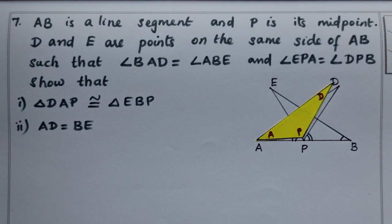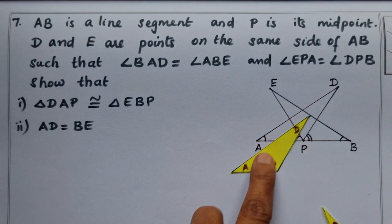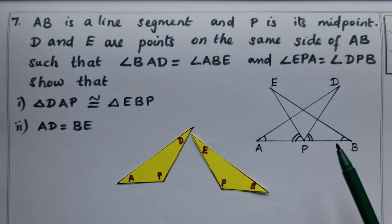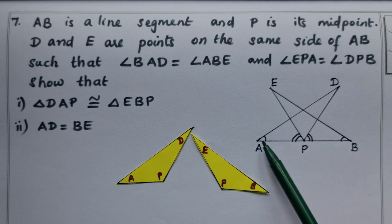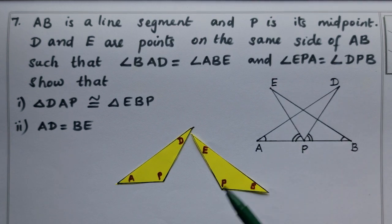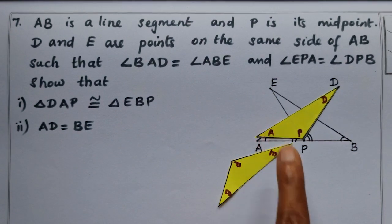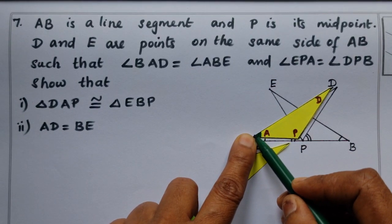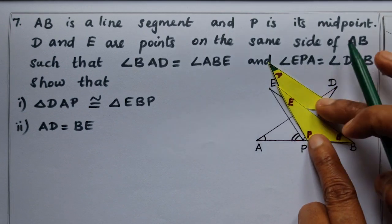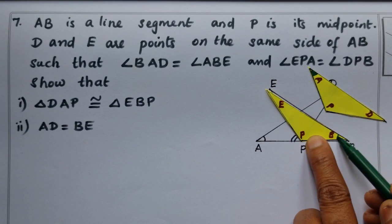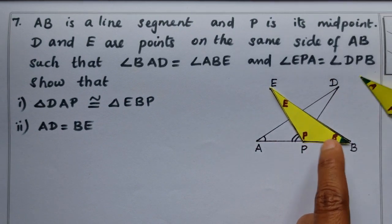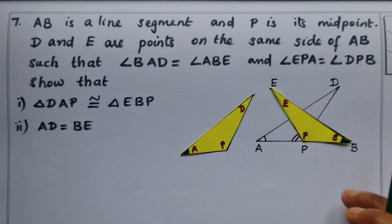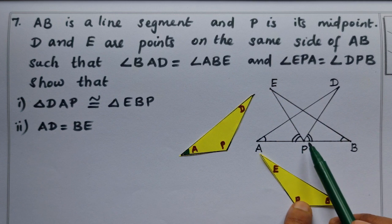Here we have two angles. Angle BAD — that is one angle. If you look at this angle, angle BAD equals angle ABE. This is the angle BAD.